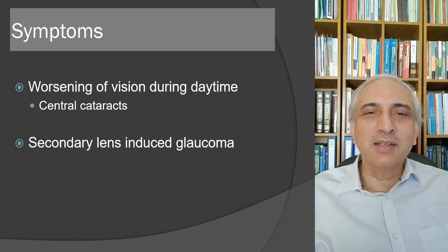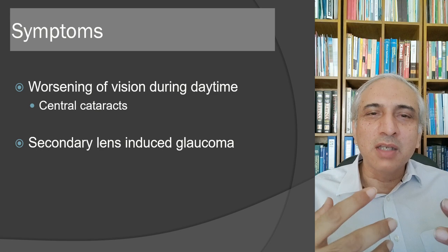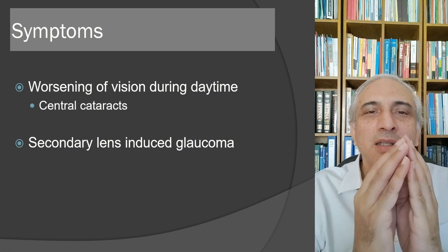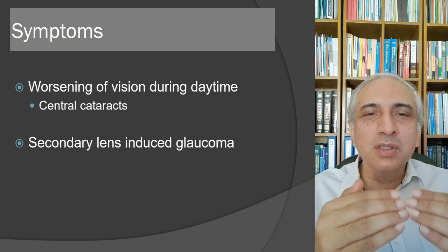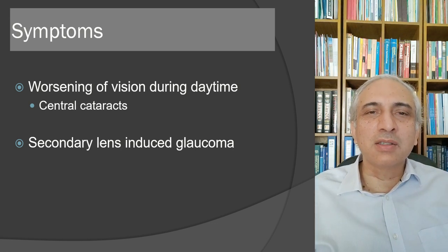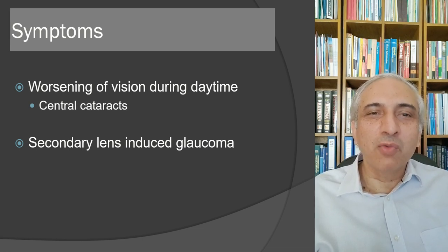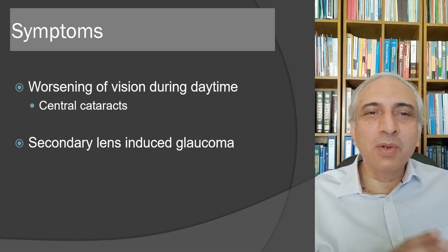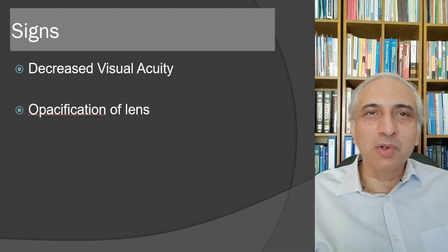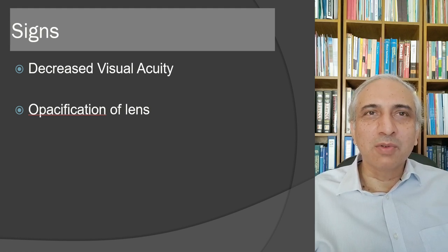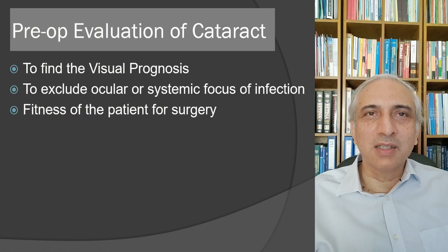Secondary lens-induced glaucoma can develop when a mature cataract causes the lens to thicken and produce angle closure glaucoma. A patient will only present with a painful red eye if secondary lens-induced glaucoma occurs; otherwise cataract formation is a painless process. Signs include decreased visual acuity and opacification of the lens.